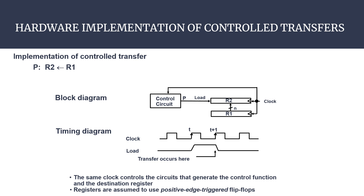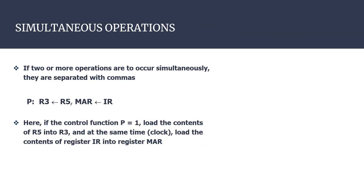Key points: the same clock controls all circuits and generates control functions. Destination registers are assumed to use positive edge-triggered flip-flops, meaning the rising edge value is 1 and the falling edge is 0. This completes the hardware implementation of control transfers.